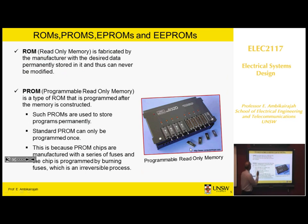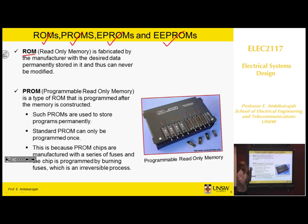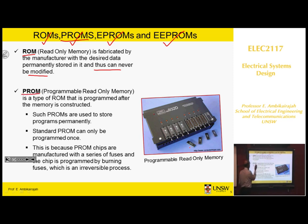Now we move on to different types of memory. I've already mentioned read-only memory, then programmable read-only memory, then erasable programmable read-only memory, and then electrically erasable programmable read-only memory. This is the sequence in which memory was developed. Read-only memory is normally programmed at the factory — it is fabricated by the manufacturer based on data you provide, and the memory comes with everything already stored. You can never modify it. The second type is PROM — programmable read-only memory — where the manufacturer supplies the memory, and there are fusible links inside.